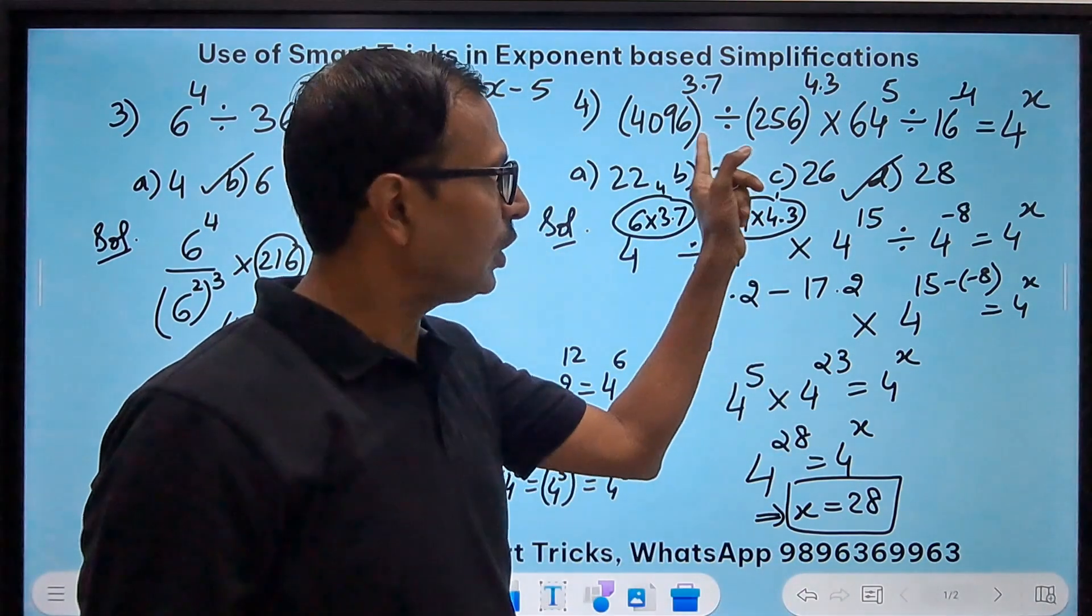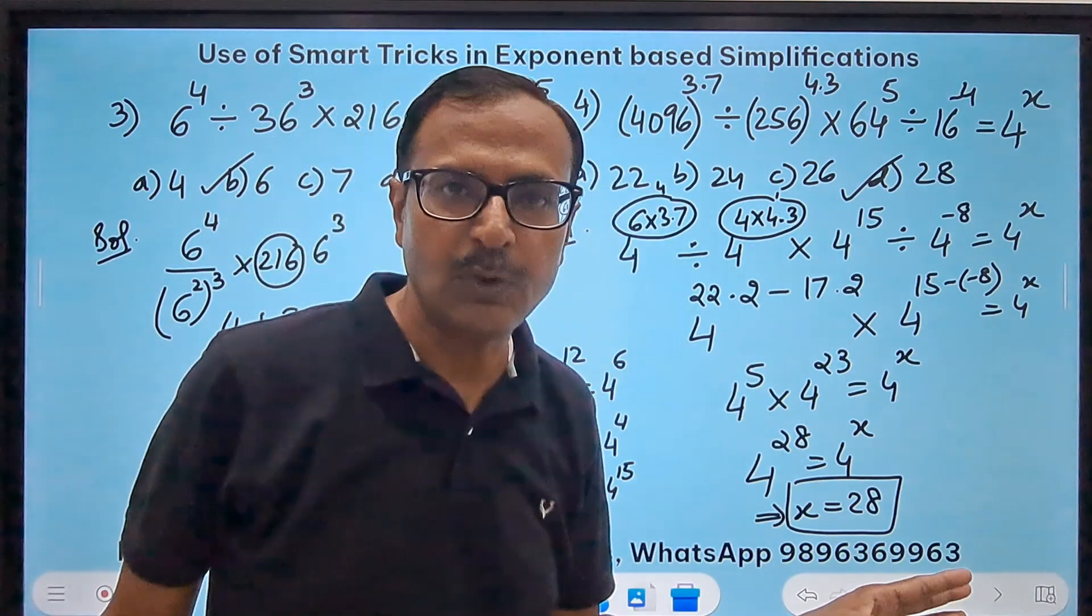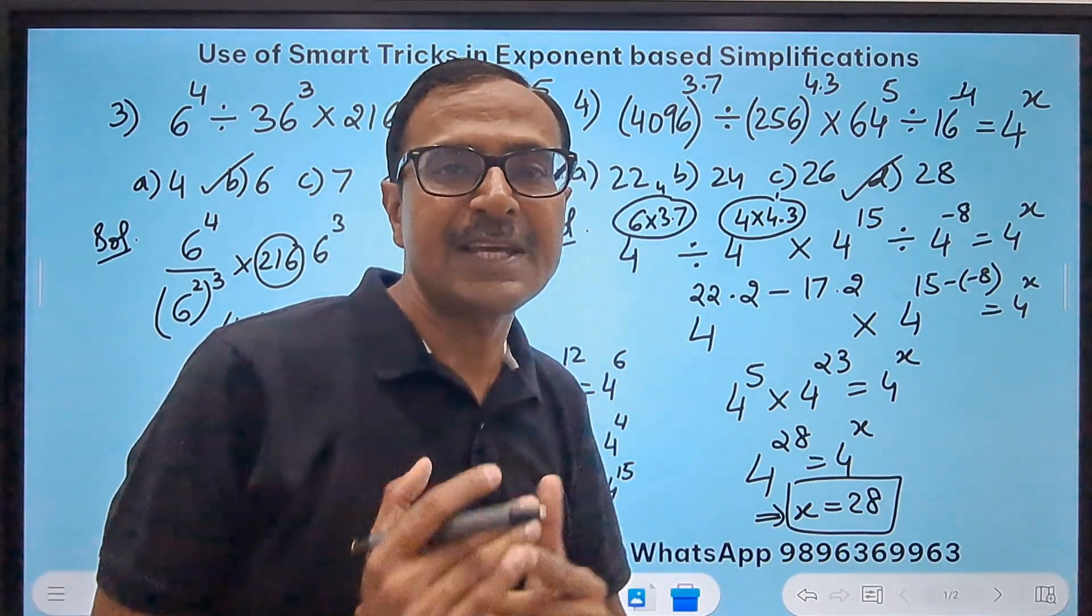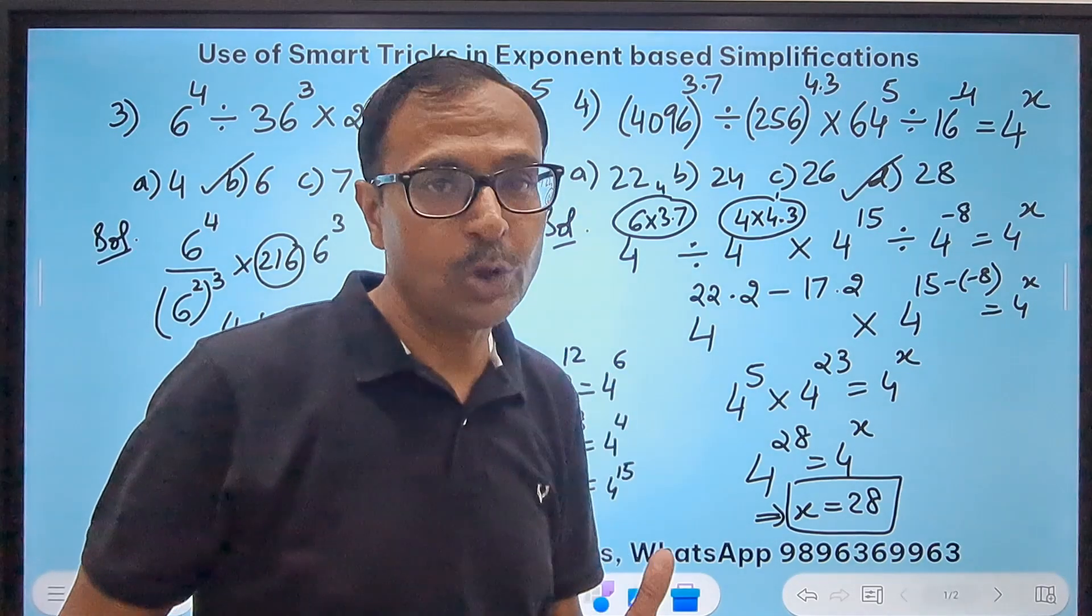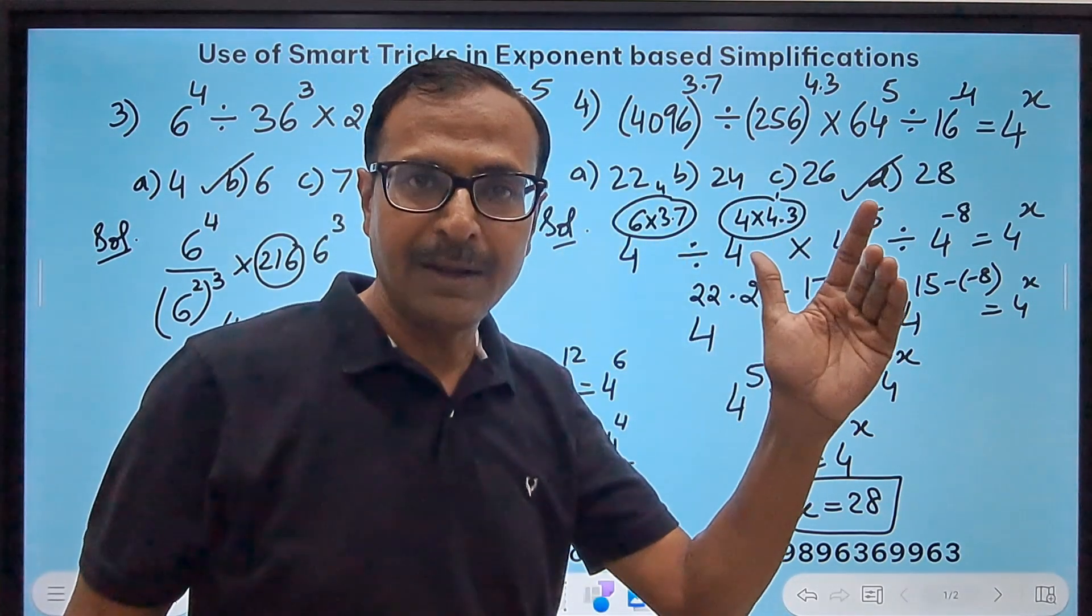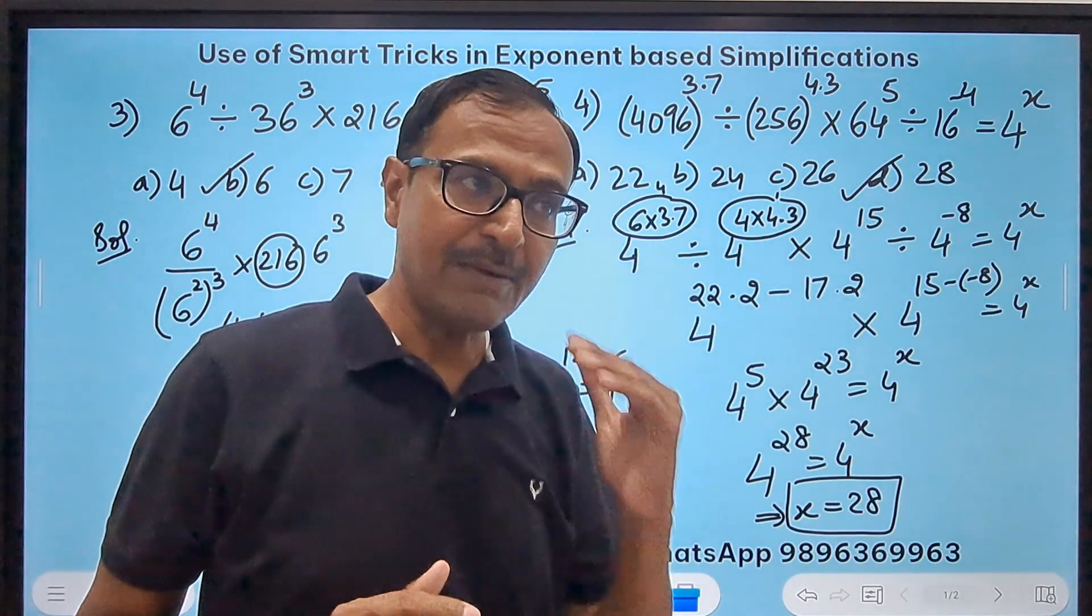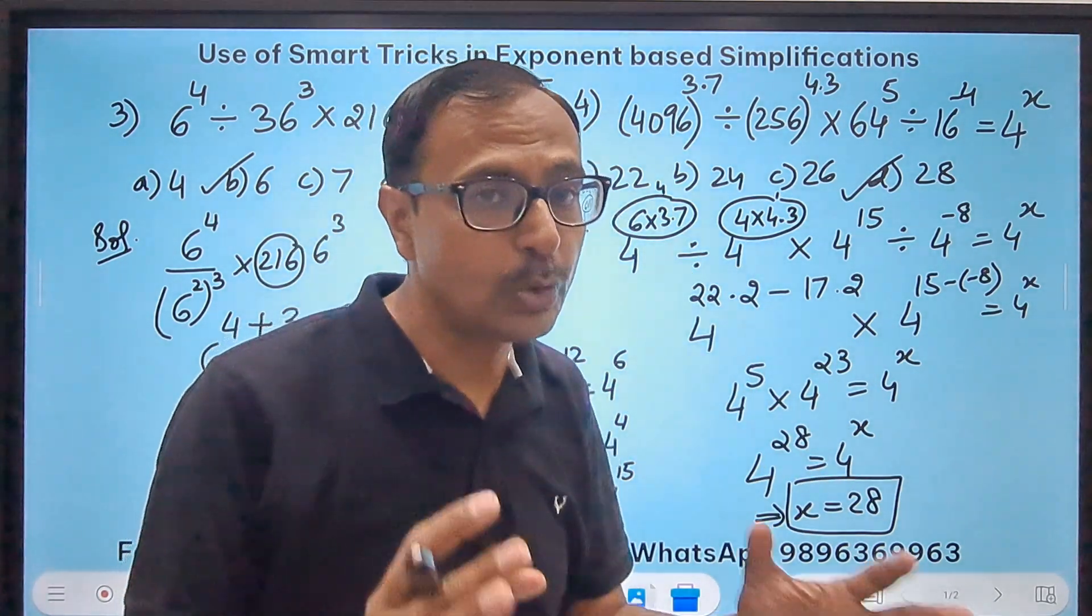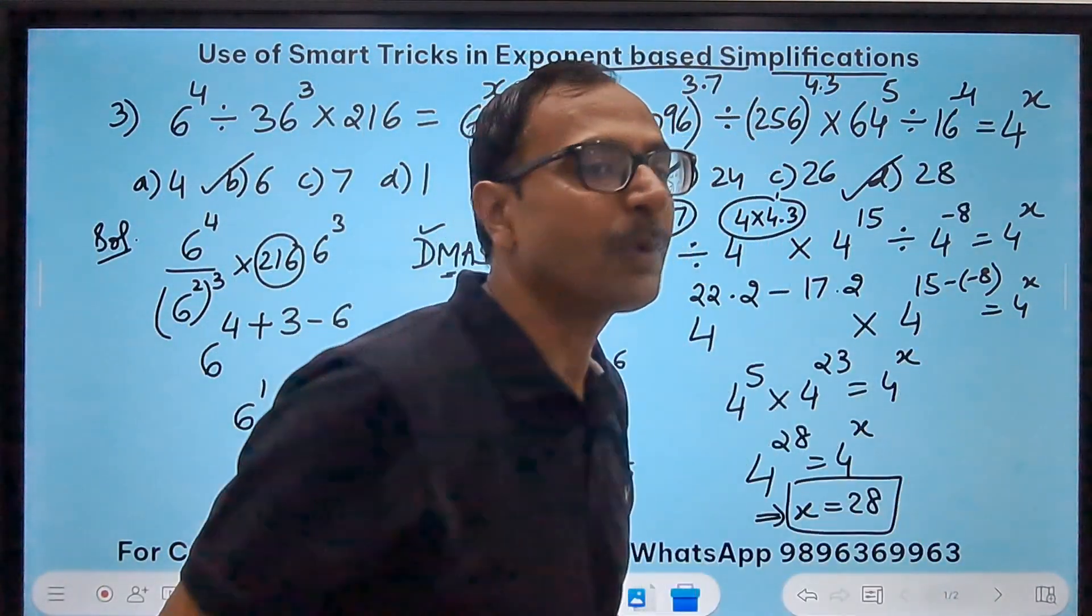So expressing all the bases as a common base, that is the secret behind solving this particular question, and many of us will do factorization because they don't know the common exponents. So the powers of 2, the powers of 3, the powers of 5, you should know all those powers. For 2 and 3, you should know up to at least 8 to 10. 2^10, 3^8. For 5, you should know at least up to 5^6. So those are the basic tendencies and competencies which you should have in cracking these exponent based simplification problems.